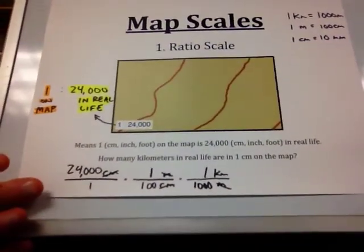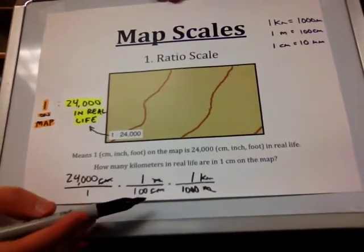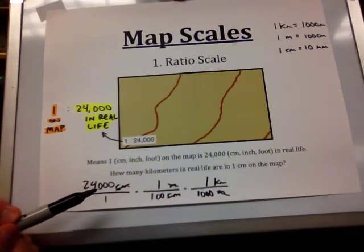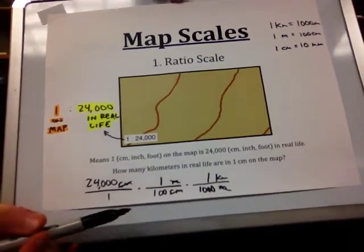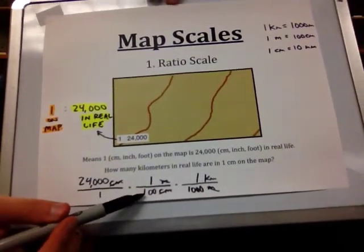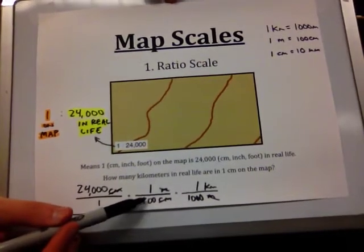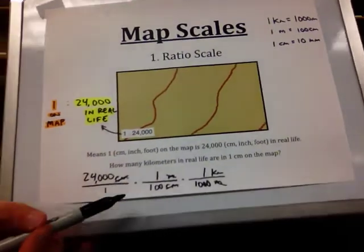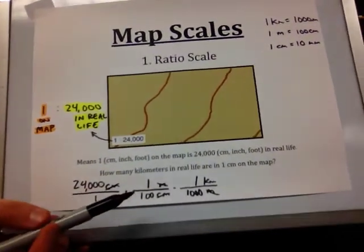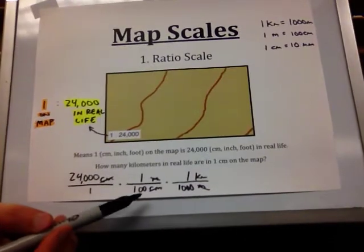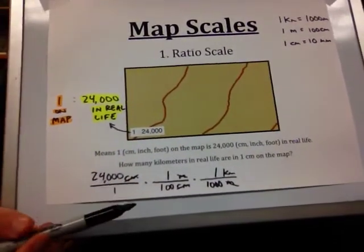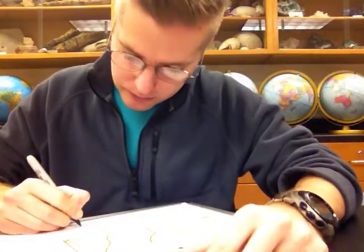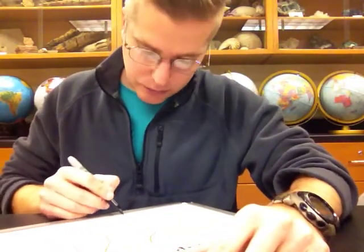Meters are on top in our second fraction, so they go on the bottom in the third, and we convert to kilometers. Kilometers are the bigger unit — they get a 1 — and as noted, there are 1,000 meters in every kilometer. We cancel out the meters, and the unit left is kilometers. Because the numbers 100 and 1,000 are on the bottom of our fractions, we divide. In the metric system, this is simply moving the decimal point five spaces.